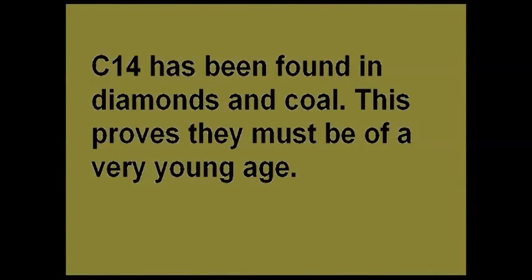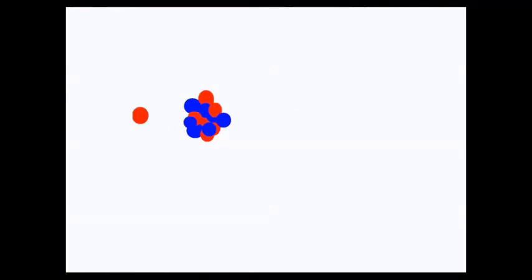But carbon dating isn't used on diamonds and coal, and for very good reason. As I explained, C14 is formed when neutrons collide with nitrogen atoms. The C14 used in carbon dating originated in the atmosphere. But you can also get it deep underground, in places where decaying uranium is giving off neutrons.